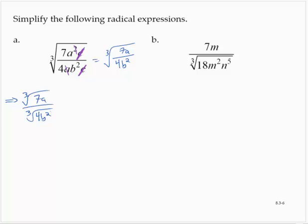Now with these cube roots, it's a little bit trickier. I have to figure out what would give me a perfect cube under the radical. I'm going to multiply by a cube root of something. 4 times what would give me a perfect cube? 4 times 2.